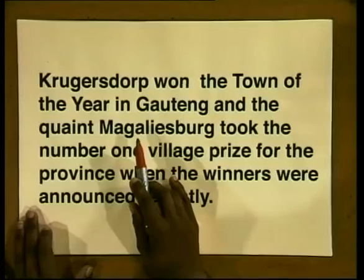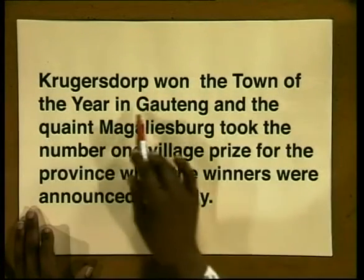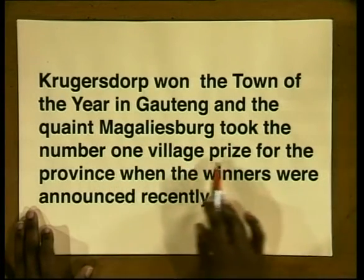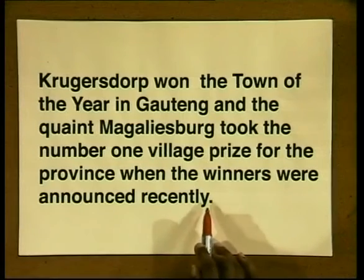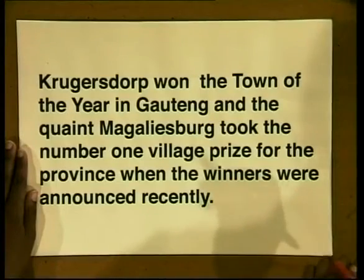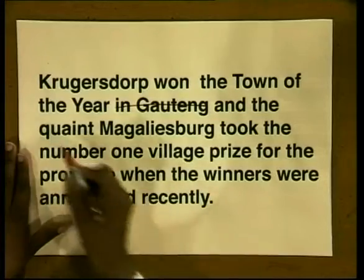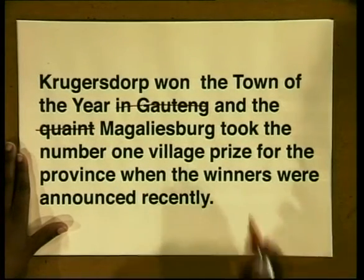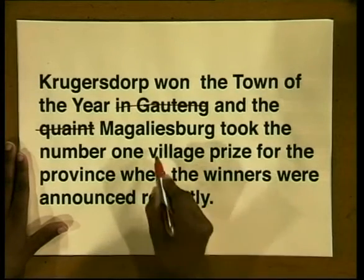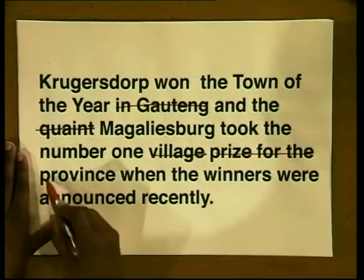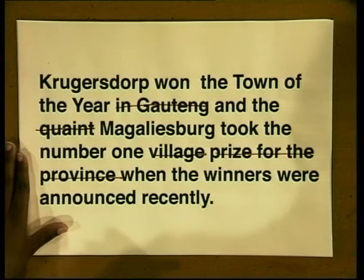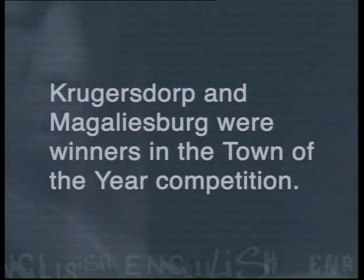Let's see how the article continues. Krugersdorp won the Town of the Year in Gauteng, and the quaint Mokhaleesburg took the number one village prize for the province when the winners were announced recently. Remember how we said that details and descriptions can be left out of summaries? We can leave out 'in Gauteng,' the description 'quaint,' and 'number one village prize for the province.' You could write something like this instead: Krugersdorp and Mokhaleesburg were winners in the Town of the Year competition.